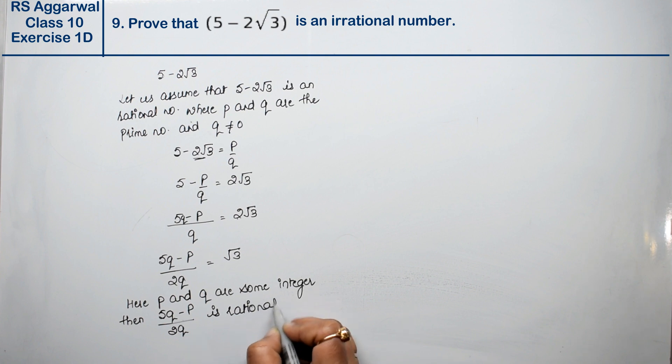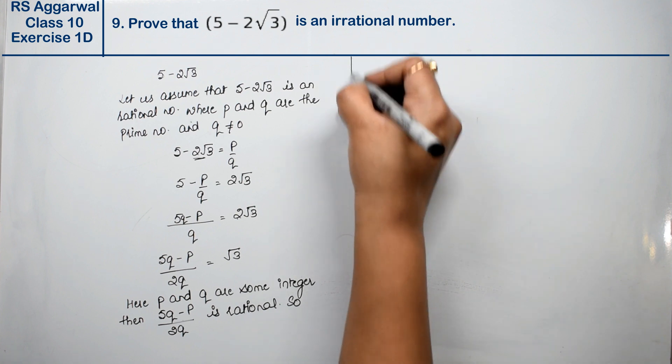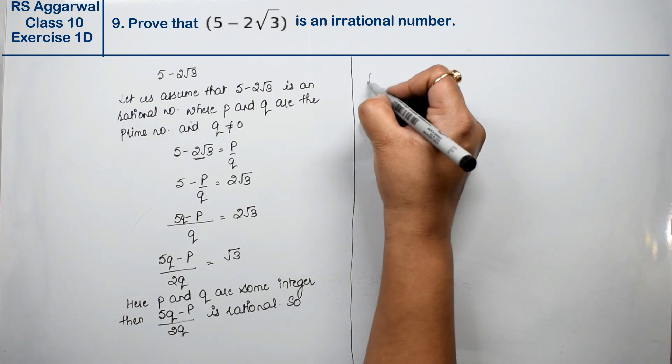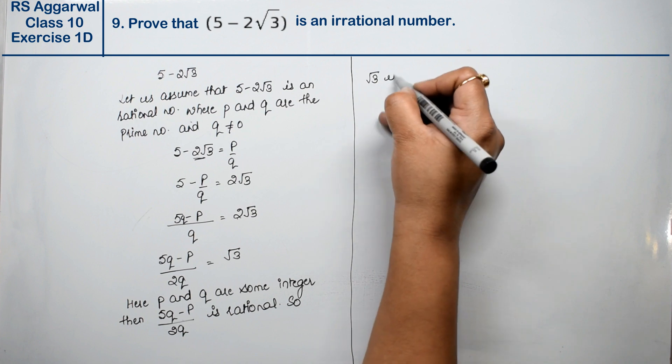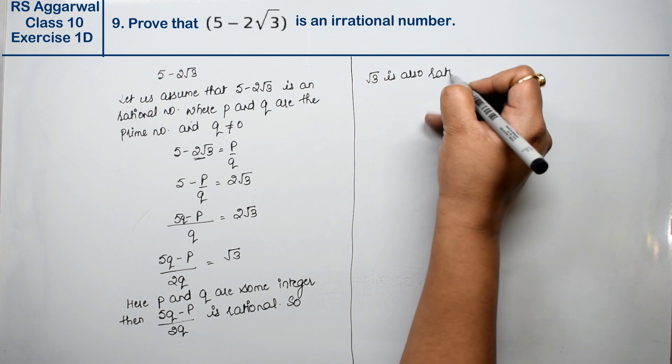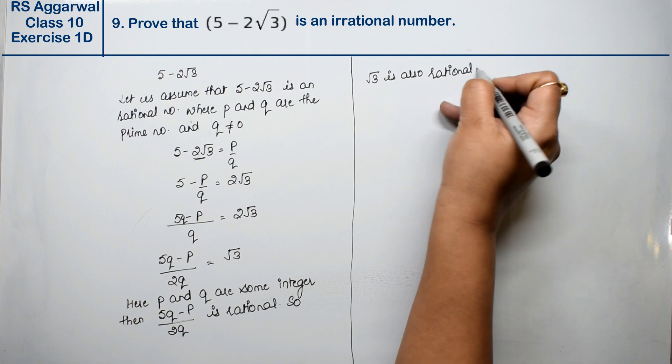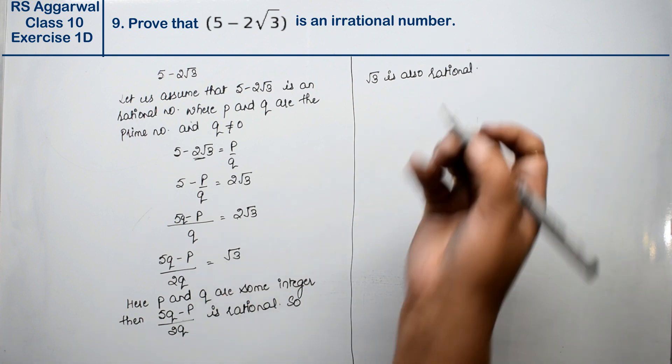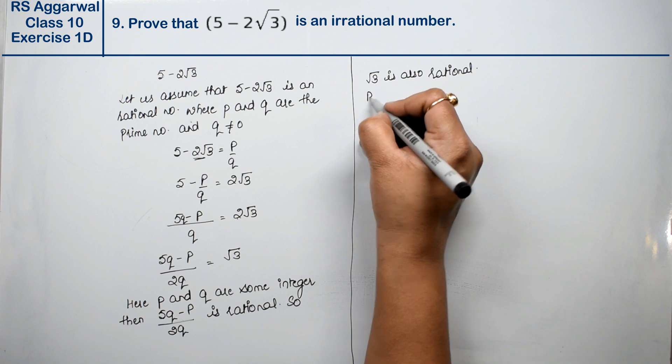And when this is rational, then root 3 will also be what? Rational. Is also rational. Root 3 is also rational. When root 3 is rational, then what we studied in the rules is wrong. That means? But...